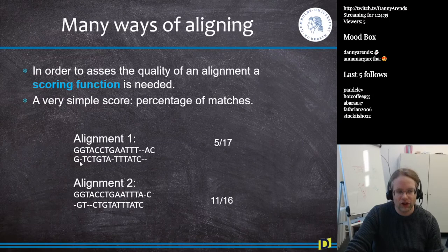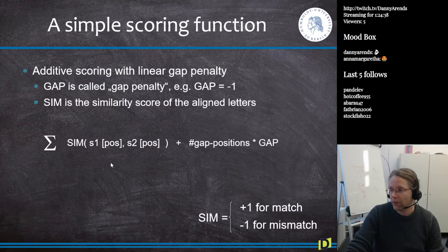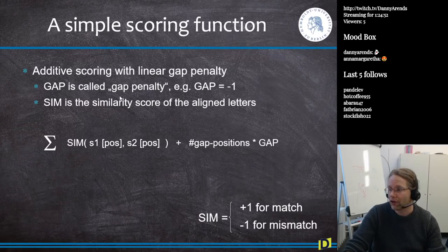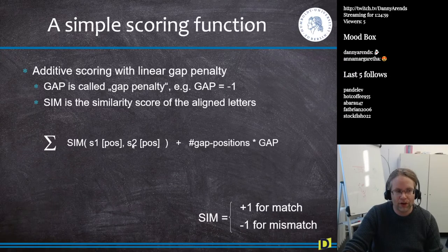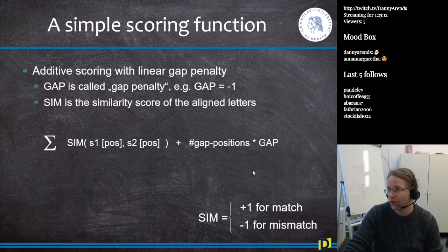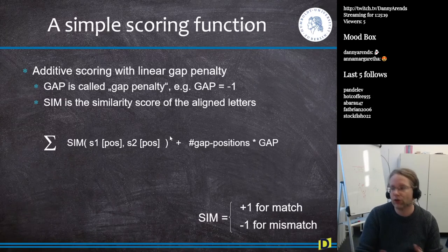Sometimes you have to introduce gaps because it's better to insert a small gap in sequence S2 so that the rest aligns better. So they introduced a gap penalty. The score is defined as the sum of the similarity plus the number of gaps introduced times the gap penalty. The gap penalty is usually set to -1, meaning the more gaps you introduce, the more score you subtract from the alignment.